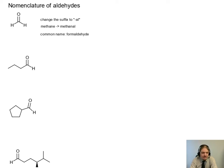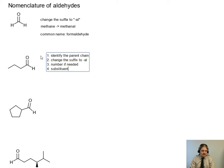We're going to go through building up the names of more complex aldehydes. I want to remind you that this is actually a process that has multiple steps. So first we want to identify the parent chain, then we want to change the suffix to -al and then we want to number if needed and identify the substituents if any.